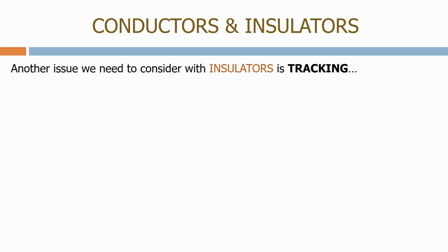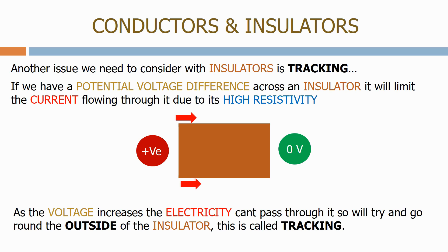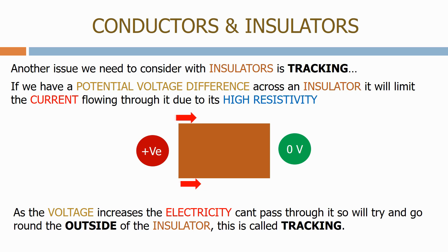Another issue we need to consider with insulators is tracking. If we have a potential voltage difference across an insulator, it will limit the current flowing through it due to its high resistivity. As the voltage increases, the electricity can't pass through it, so it will try to go round the outside of the insulator. This is called tracking.